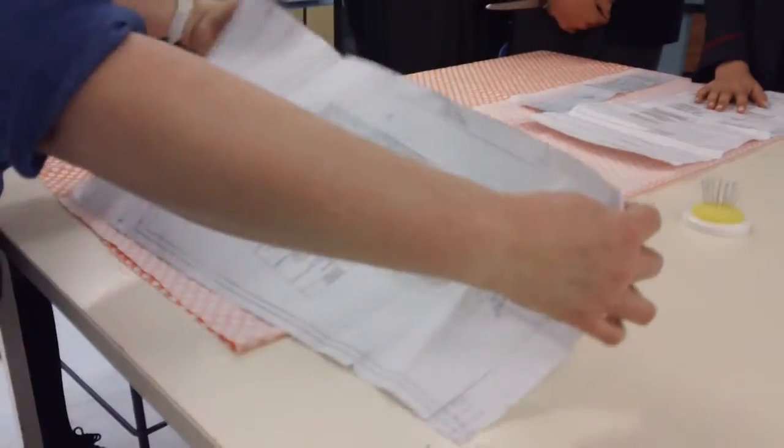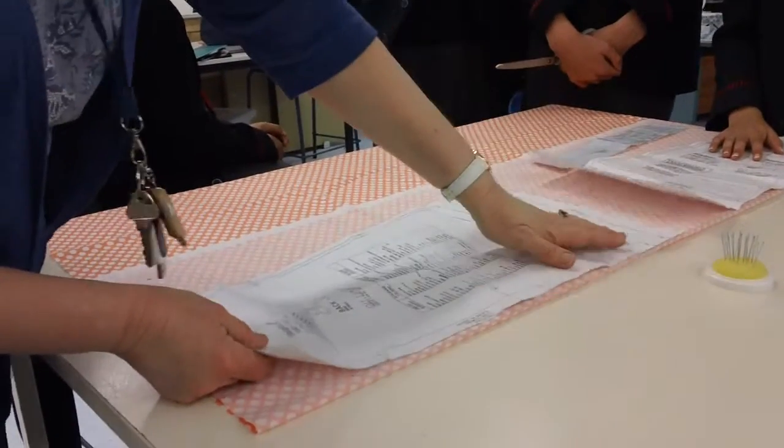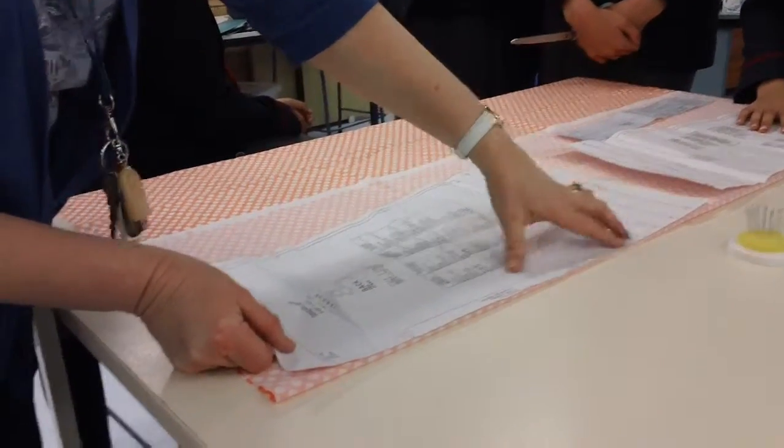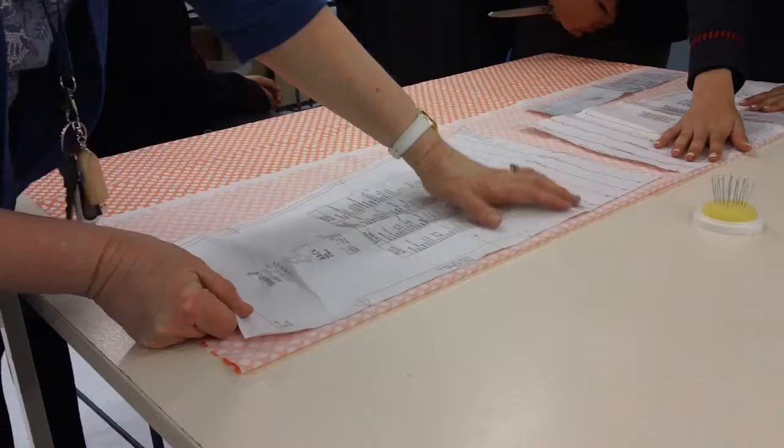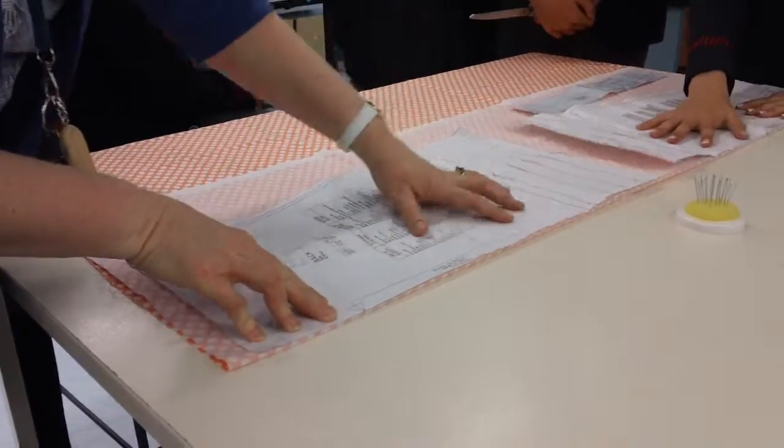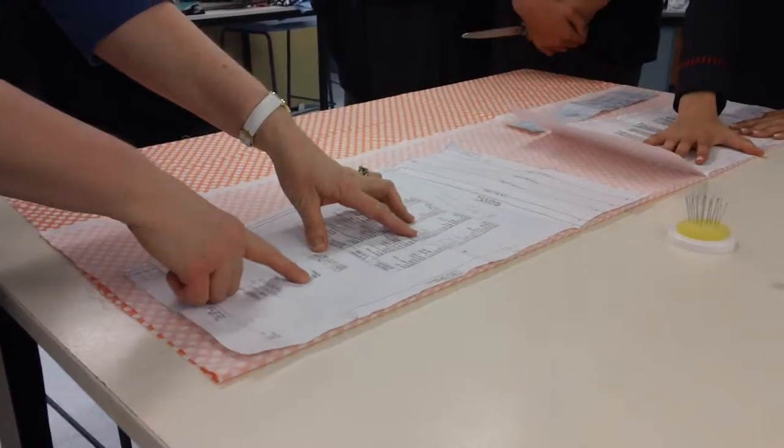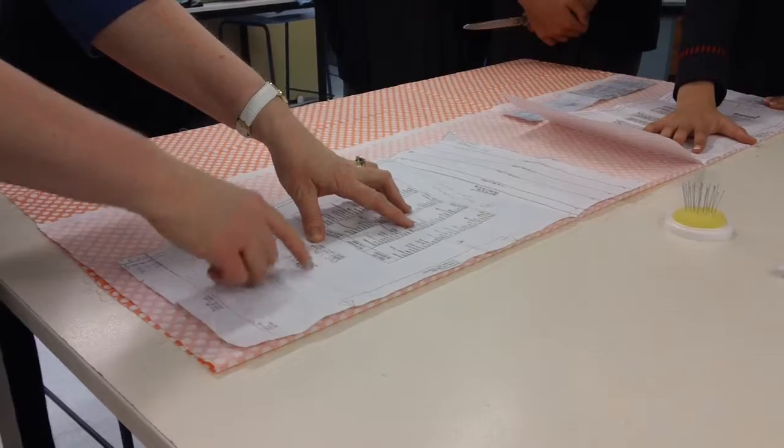This here says centrefold, and you're going to put that on the fold of the fabric like that, right next to the fold, not a centimeter away, right on it. That will become the front of the skirt - no, this is the back. So it says here, piece 8, back C, cut one on folds.